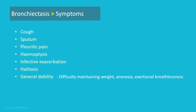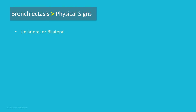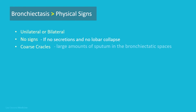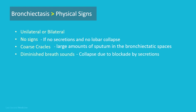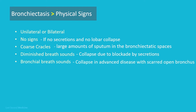There is difficulty maintaining weight, anorexia, and exertional shortness of breath. Physical signs in the chest may be unilateral or bilateral. If the bronchiectatic airways do not contain secretions and there is no associated lobar collapse, there are no abnormal physical signs. When there are large amounts of sputum in the bronchiectatic spaces, numerous coarse crackles may be heard over the affected areas. Collapse with retained secretions blocking a proximal bronchus may lead to localized diminished breath sounds, while advanced disease may cause scarring and overlying bronchial breathing. Finger clubbing is common, and wheeze may be audible in asthma, COPD, and allergic bronchopulmonary aspergillosis.